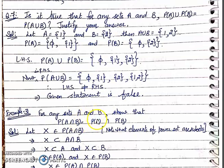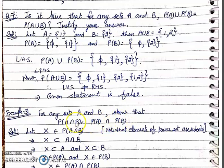To prove these two sets are equal, we have to prove that P(A∩B) is a subset of P(A)∩P(B). So we take an arbitrary element of P(A∩B).